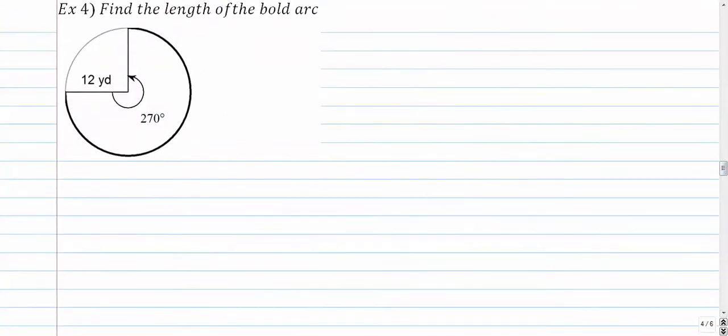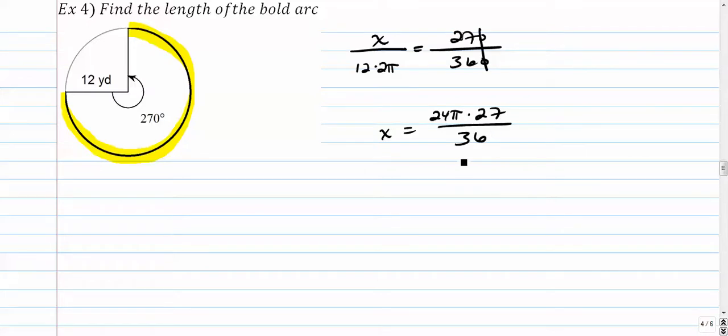Number four, find the length of the bold arcs. We want to go three quarters of the way around the circle, so you can think of it like that. It'd be three quarters of the perimeter of the circle, the circumference of the circle I should say. But let's set it up into our good old-fashioned proportion: 2 times π times the radius. Up here we have 270, 360. So let's see, 24π times 270. I'll call it actually 27 because the zeros cancel over 36. You can see there's some simplification you can make again, but let's just go right to our calculators.